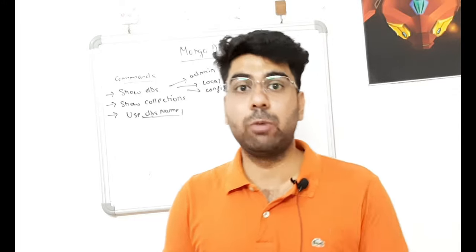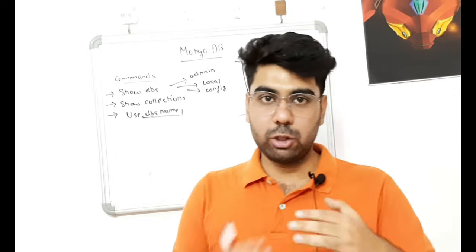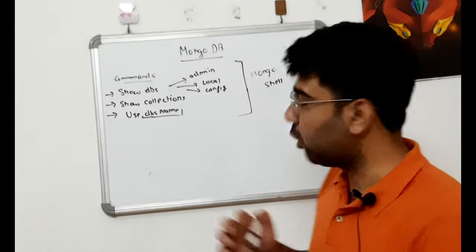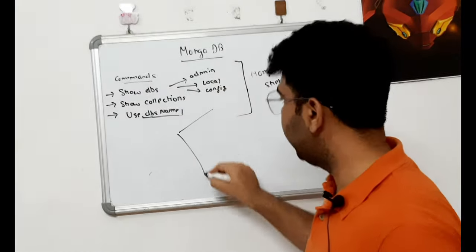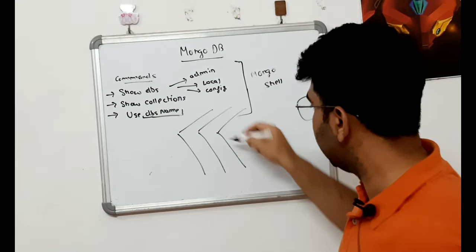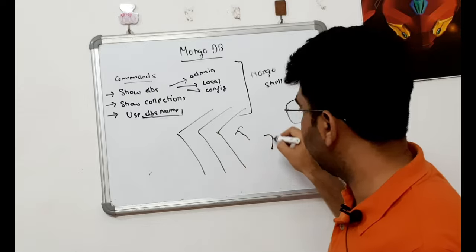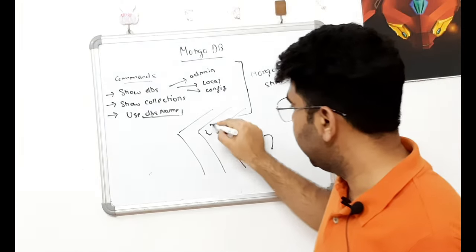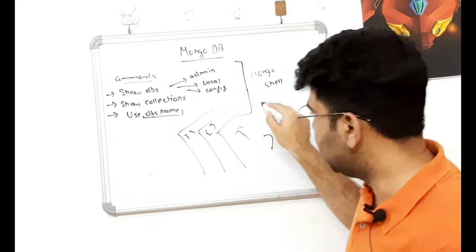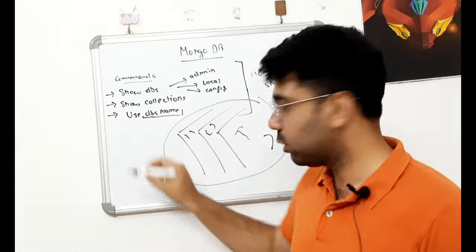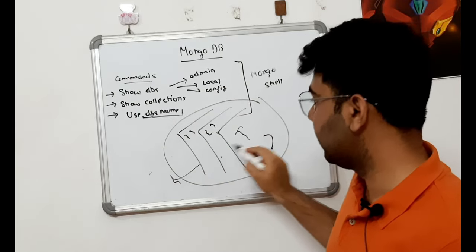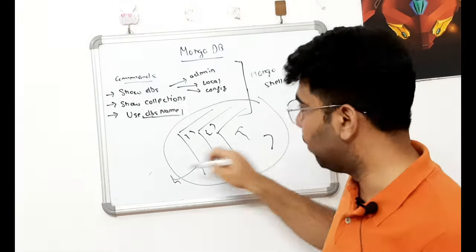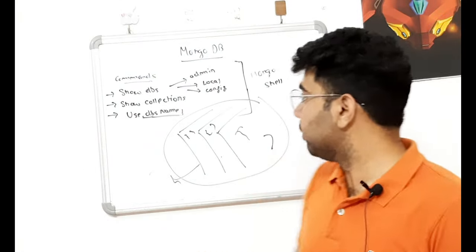Collections is a group of documents. Documents are essentially objects — every document is an object. So think of it this way: a single document is a single object. Multiple documents grouped together is called a collection. Collections are present inside your database.